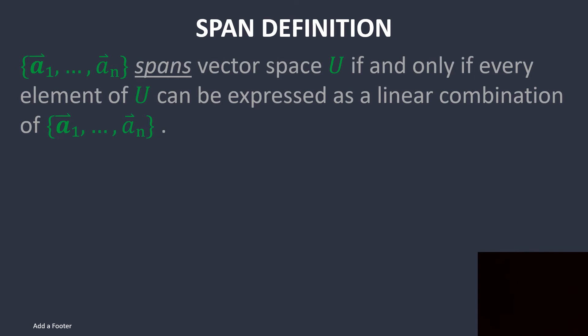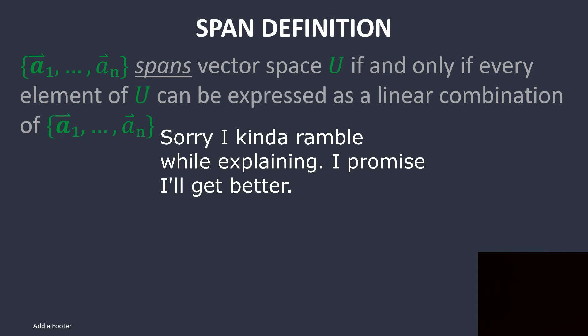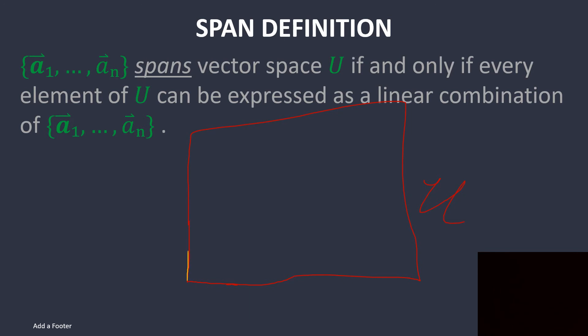Now, a set {a_1, ..., a_n} spans a vector space U if and only if every element of that vector space U can be expressed as a linear combination of that set. Which basically says if you have a plane which goes out through here and this is our vector space U, if you have like a vector here and a vector here, let's just call this one vector Y and vector X.